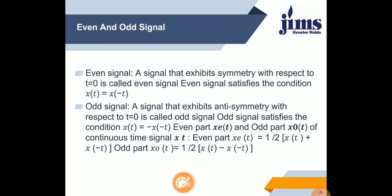Next are even and odd signals. An even signal exhibits symmetry with respect to t equal to 0. Even signal satisfies the condition x(t) equal to x(−t). For example, f(x) = x² — when x is replaced by −x, the square of minus is always positive. Therefore, x², x⁴, x⁶ — generally, any power of x that is an even number is an even signal. Also, cos(−θ) equals cos(θ), so in trigonometry, cosine is always an even signal.